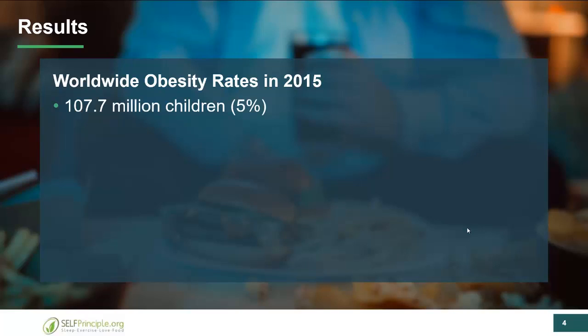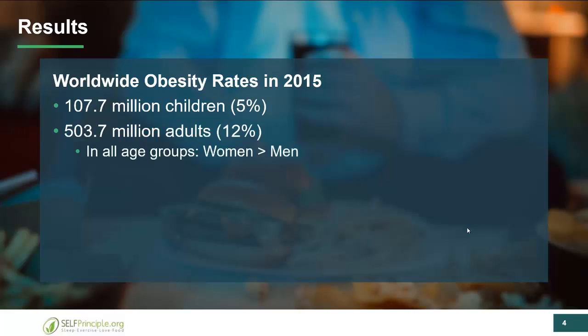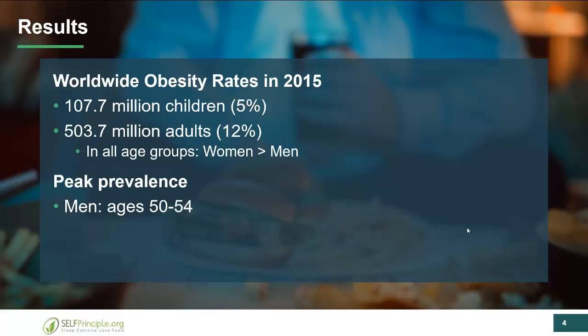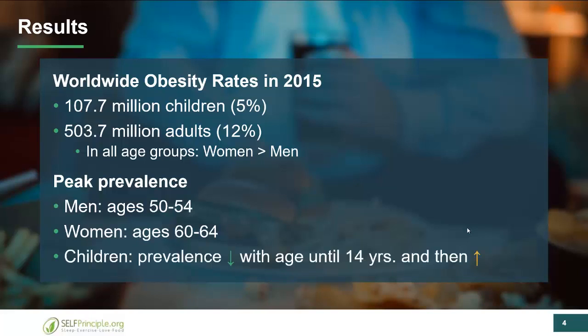When we look at worldwide obesity rates in 2015, we find a few fascinating things. First, 5% of children — 107.7 million children — are considered obese. In adults, it's almost half a billion, and women tend to be in the obese category more than men. Men peak in obesity around ages 50 to 54, but for women it's almost a decade later. For children, there's a steady increase up until age 14, and even after a decline, obesity continues well into adulthood.